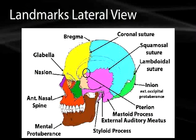The pterion is of clinical significance, especially for USMLE testing, because this thin plate of bone — where four bones come together: frontal, parietal, temporal, and sphenoid — is a very thin table. The middle meningeal artery runs directly behind it, so it can be severed during accidents, leading to epidural hematoma and potentially death.